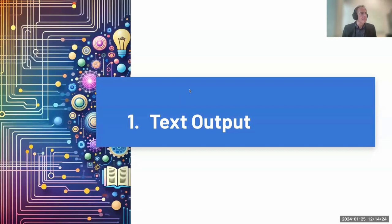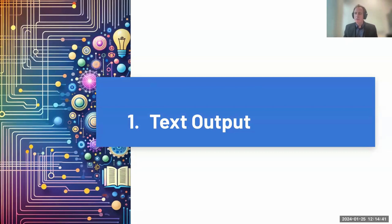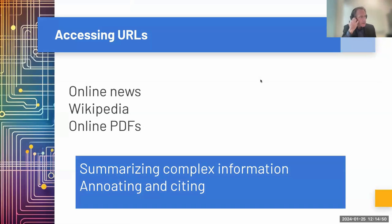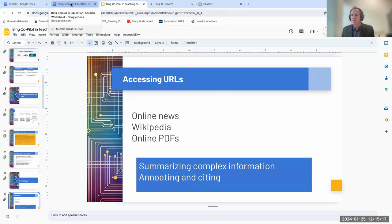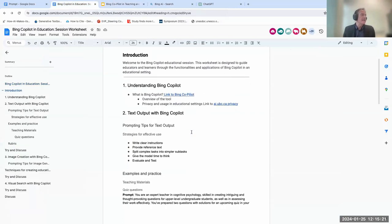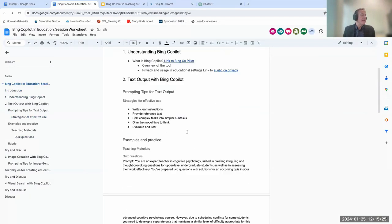Now I want to move through the tool itself and do some demonstrations, thinking about it in three buckets. The three capabilities Bing Copilot has are: text output, image creation, and computer vision — or visual search as Microsoft calls it. Let's start with text output, which you're probably most familiar with. One way we might start using this in class is accessing live URLs with Bing — this is a little bit different from other tools, since ChatGPT 3.5 can't access live URLs but Bing Chat can.